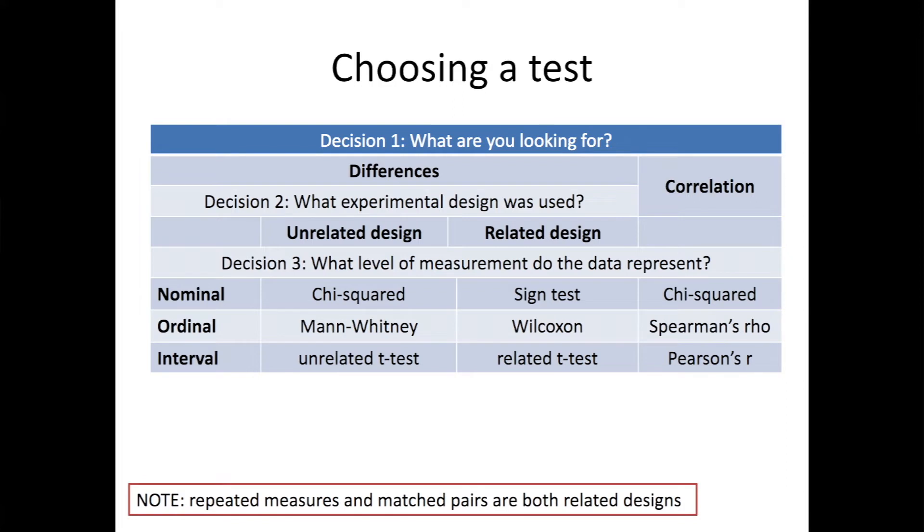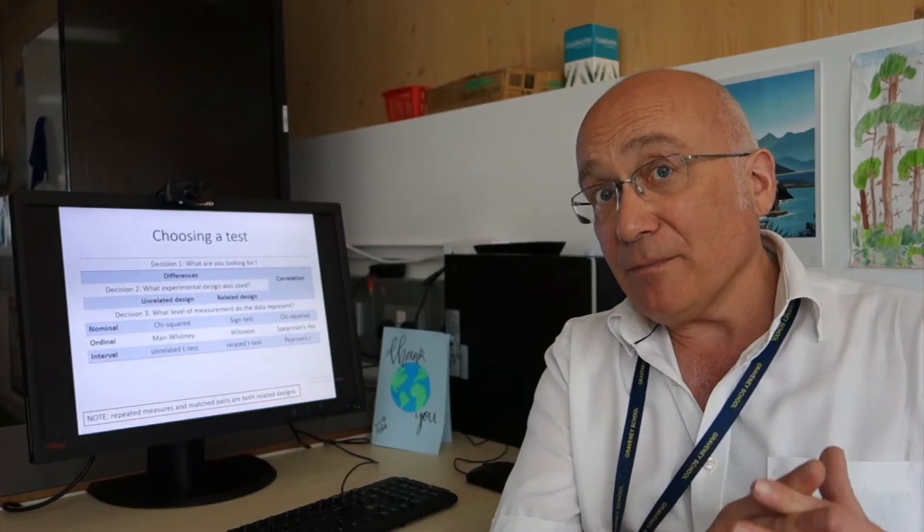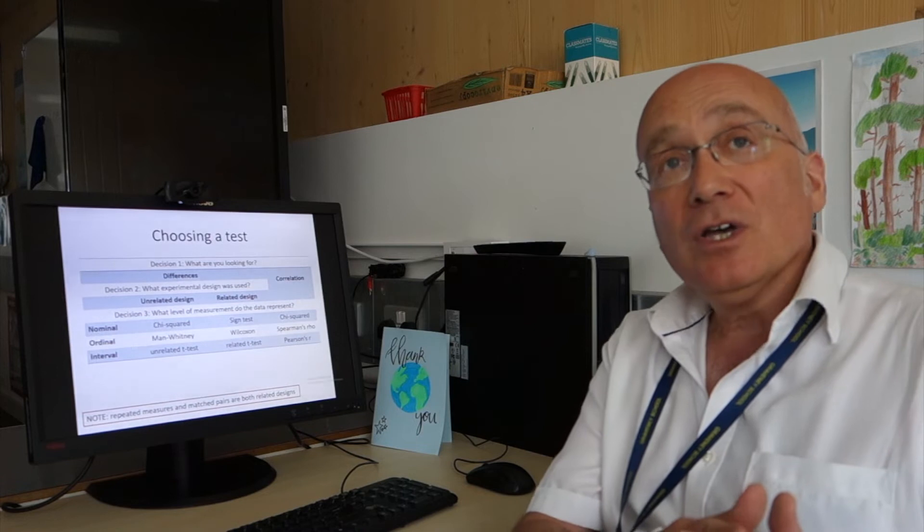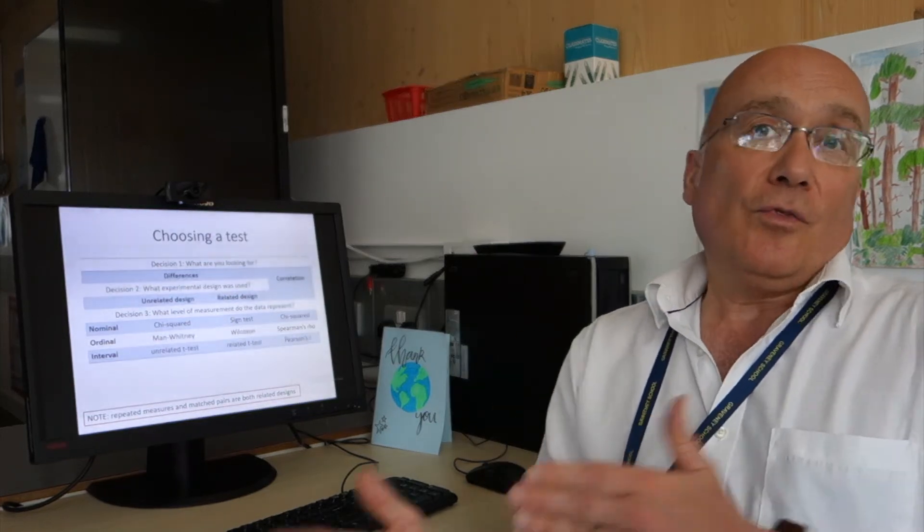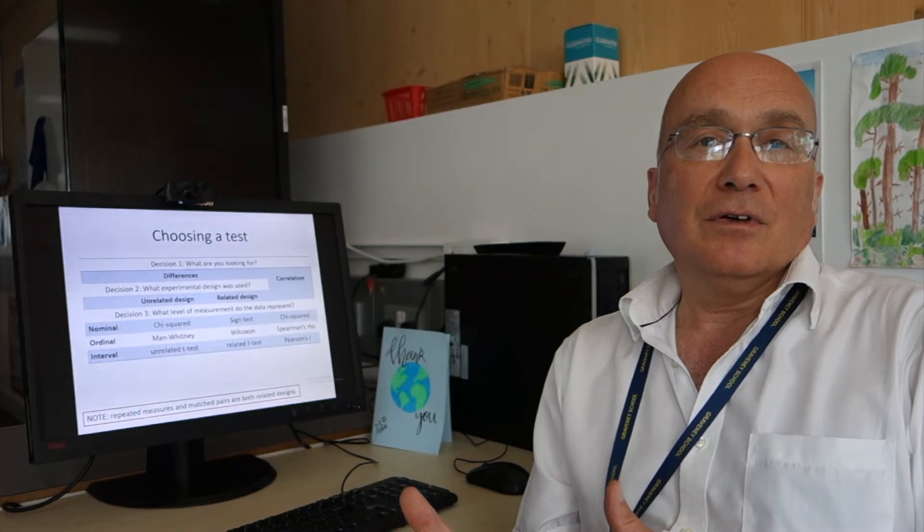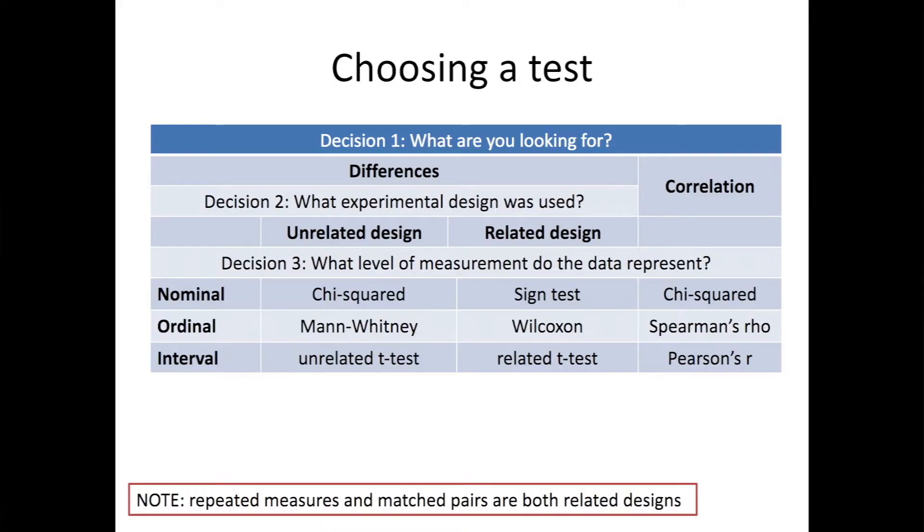And thirdly, I need to know what level of measurement I'm using. So it is that I was looking on SIMS to find out if they were late or not. And that's in categories, isn't it? Either they're late or they're not. And so that's nominal data. So looking on this table, I can see that the test I need is chi-squared.